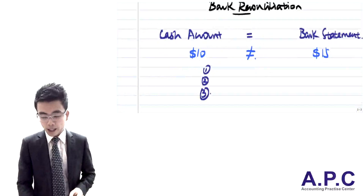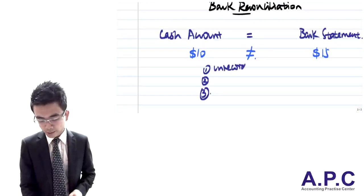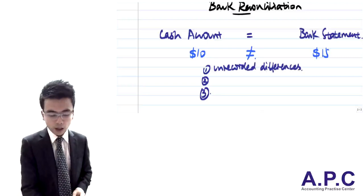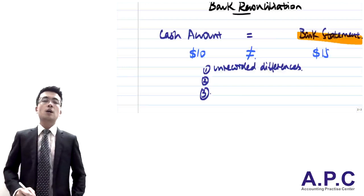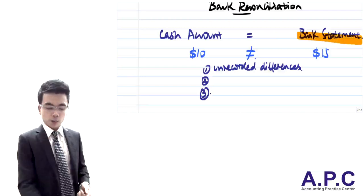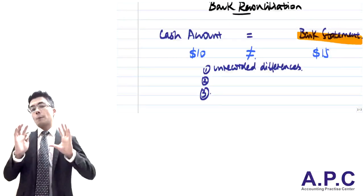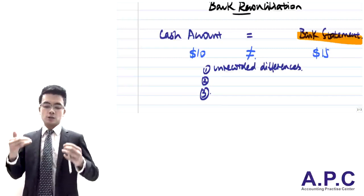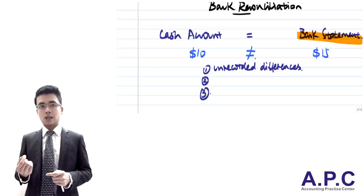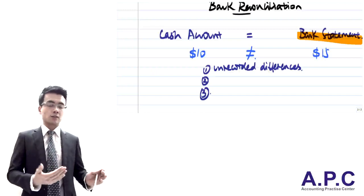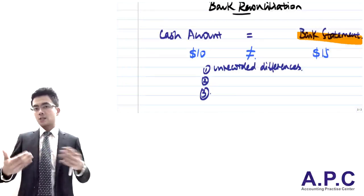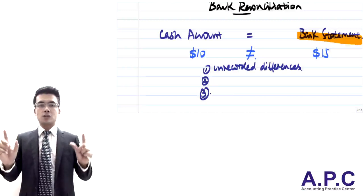The first reason is unrecorded differences. For example, the bank charges an administration fee — say $3 — directly from the bank account. The bank statement shows a cash outflow of $3, but this hasn't been updated immediately in the cash account. So the bank statement reflects the deduction, but the cash account hasn't recorded it yet, creating a difference between the two.